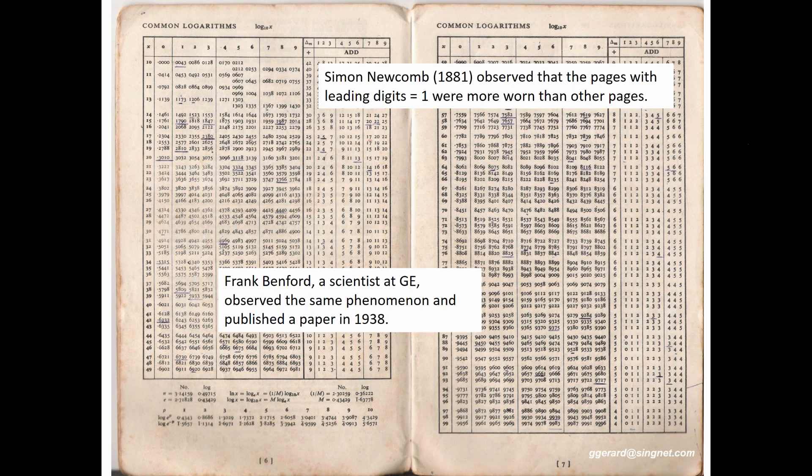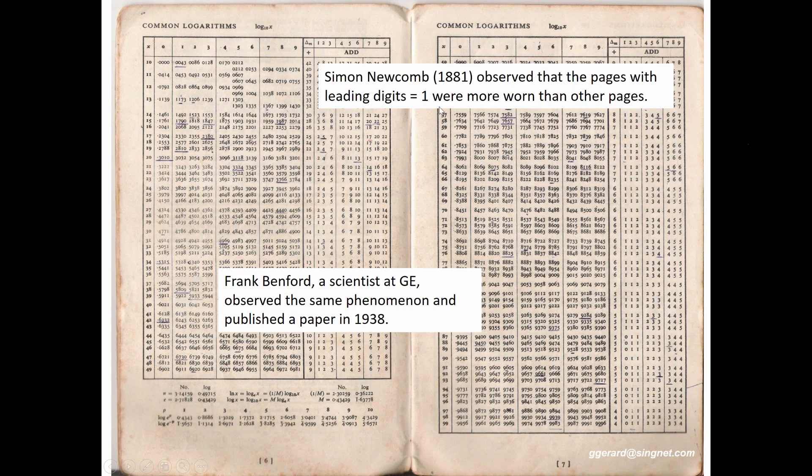Benford's paper got a lot of attention, mostly because it was right after a famous physics paper in a special issue, so everybody read Frank's paper as well, and now we are talking about Benford's Law. Benford's Law for leading digits — that's the first number — gives us a discrete probability distribution. The probability of a particular leading digit D is equal to log base 10 of (1 + 1/D), where D equals 1, 2, 3, all the way up to 9. We don't have a leading digit of 0 because that wouldn't be a significant leading digit.